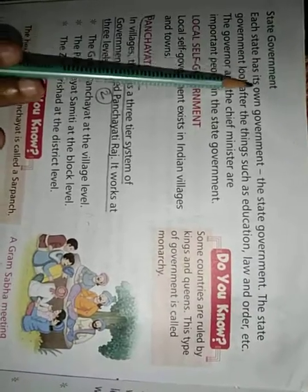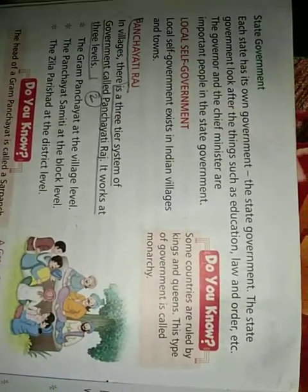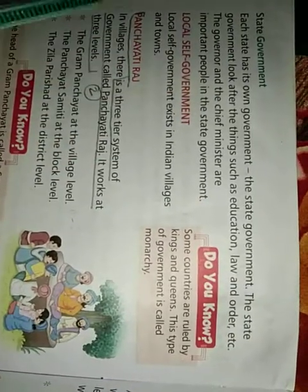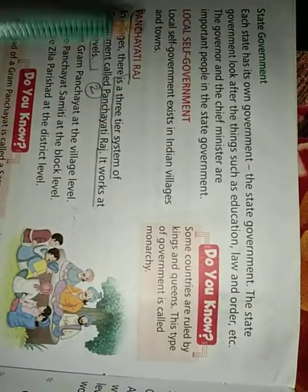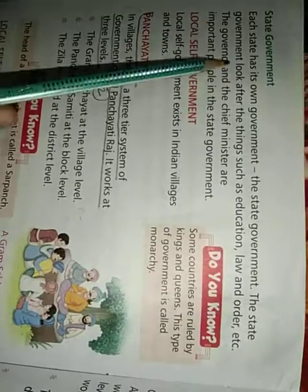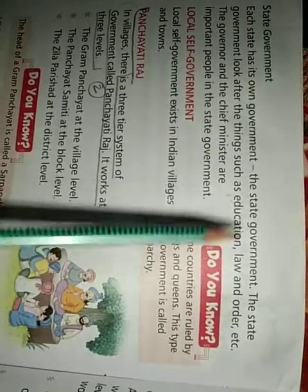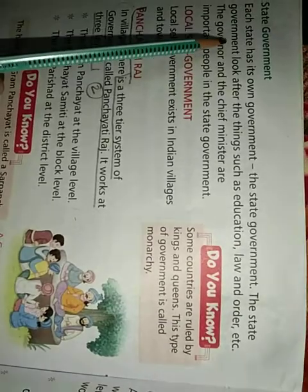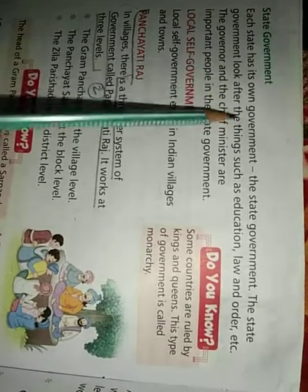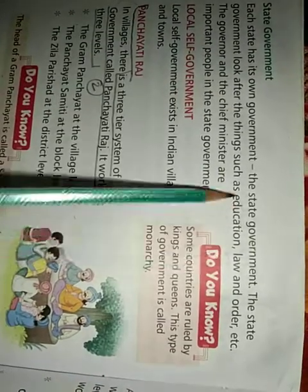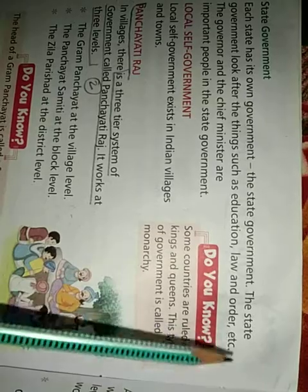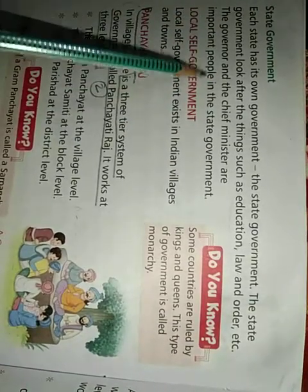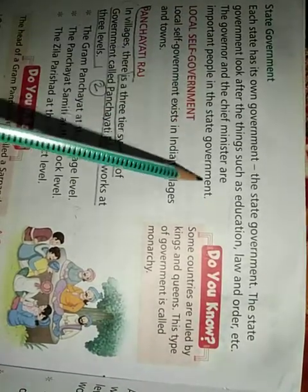Each state has its own government. The state government looks after things such as education, law and order, etc. The governor and the chief minister are the important people in the state government.